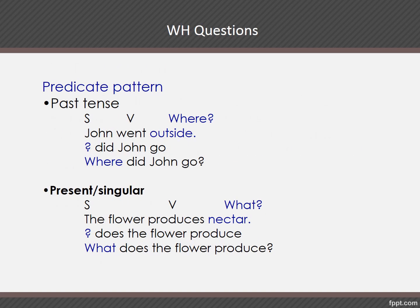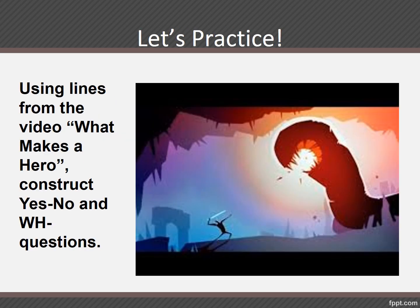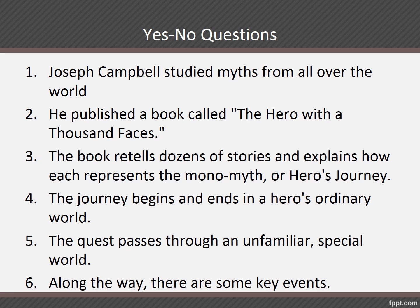You might have noticed that the rules are the same for transforming statements to both yes or no and WH questions. So for practice, I took some lines from the video 'What Makes a Hero?' For the first part, I will do it along with you. Number one: 'Joseph Campbell studied myths from all over the world.' The verb 'studied' is past tense, so rule number three applies — we use 'did.' 'Did Joseph Campbell study myths from all over the world?' Every time we use do, does, or did, use the base form. Number two: 'He published a book.' Again, action word, rule number three, past tense — 'Did he publish a book called The Hero with a Thousand Faces?'